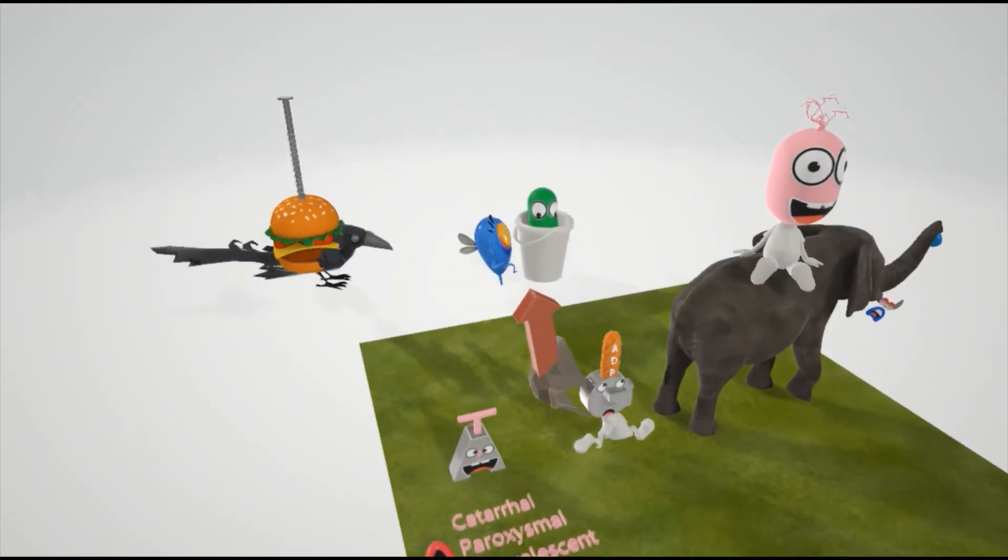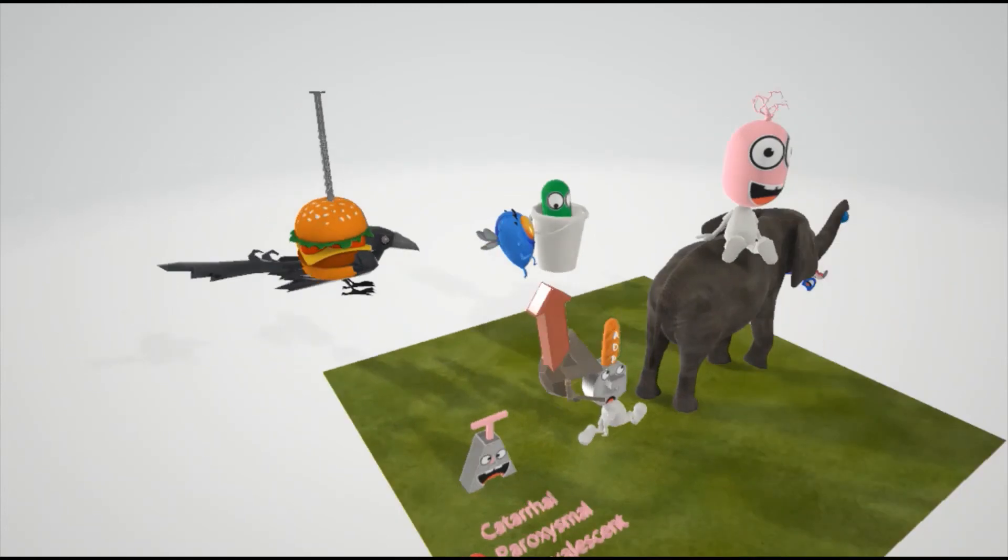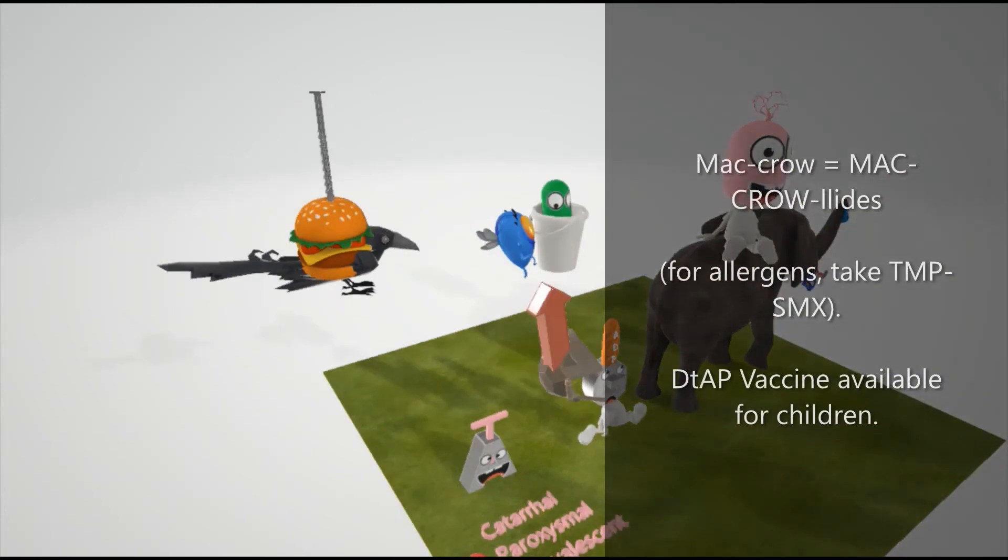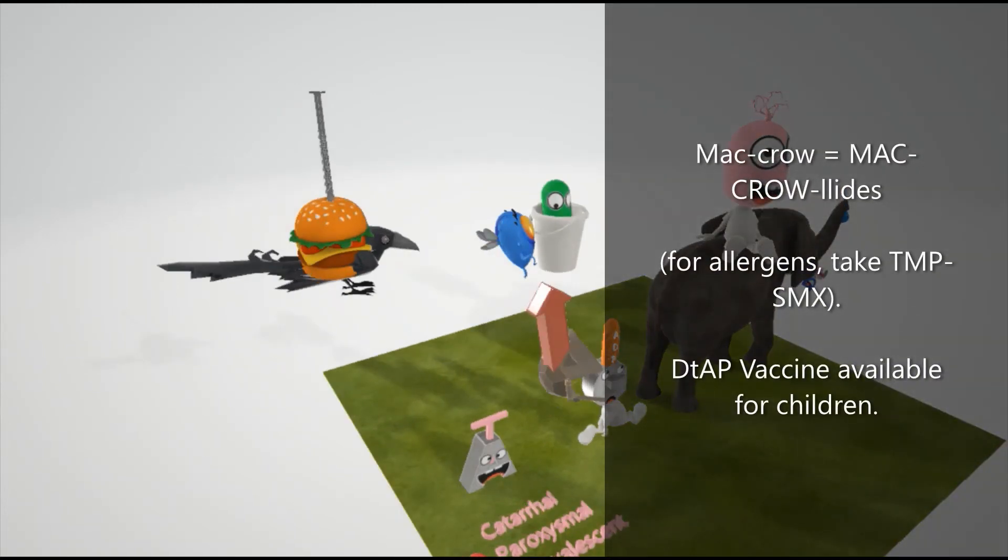We note this crow over here that's made of a mac, a subway mac. This crow with a mac, it's to help us remember the macrolides that are effective against Bordetella pertussis. If someone's allergic to that, they should take TMP-SMX. And there's a syringe in him to help us remember that there's a syringe, the DTaP vaccine, which should be given to children to prevent whooping cough.